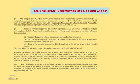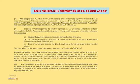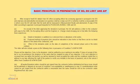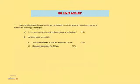All work deviation orders should be got signed from the contractor before distribution, but their issue should not be withheld or delayed on account of the contractor's non-availability or unwillingness to sign. If a work order or deviation order cannot be got signed from the contractor within a reasonable time, the same should be sent to the contractor under registered post.